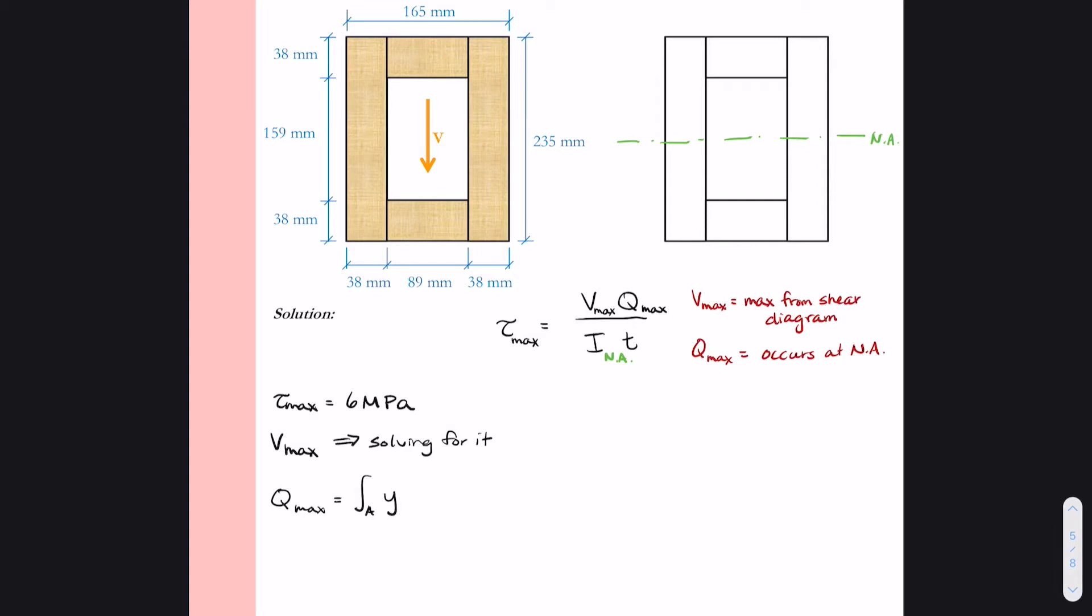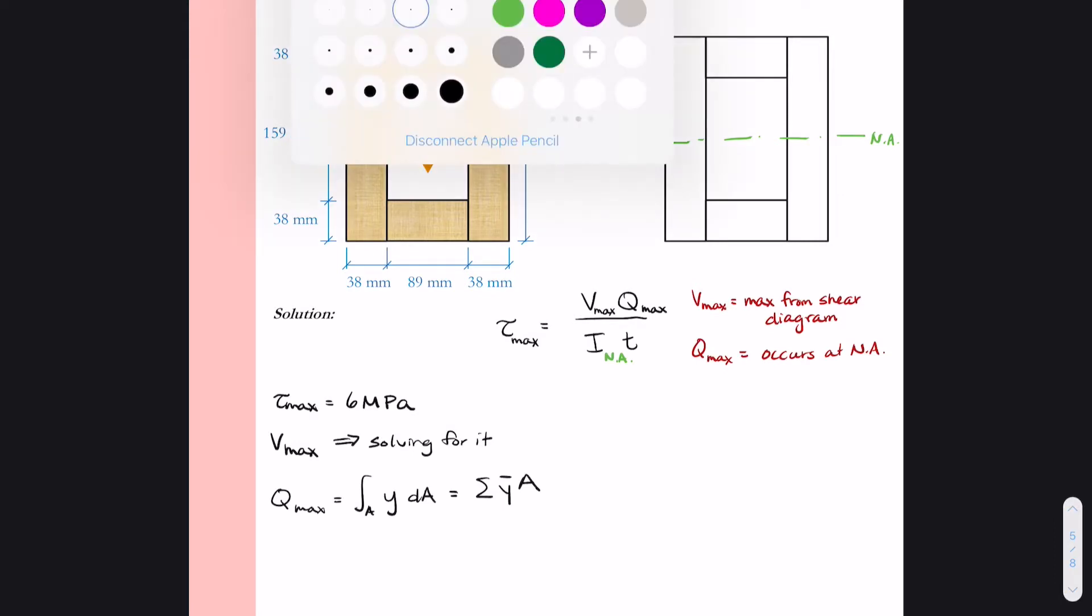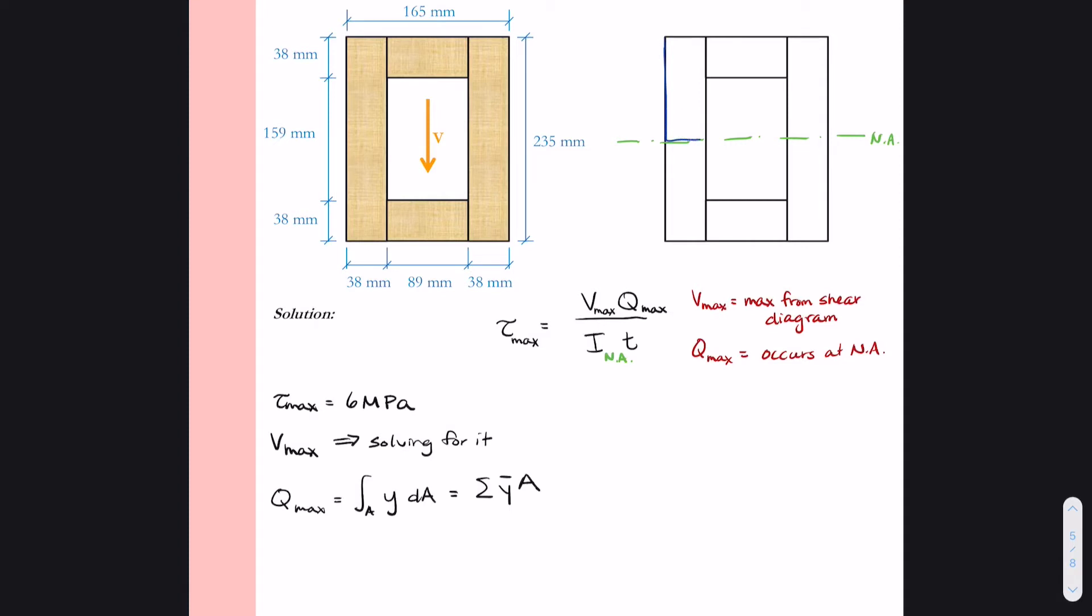Q max, we said Q max will be at the neutral axis. So what is Q? Q is the integral over the area of Y dA or the summation of Y bar A if we can break up the cross-section into discrete shapes of areas that are easy to calculate.